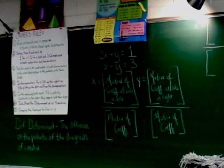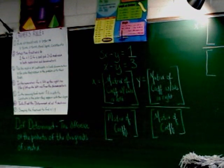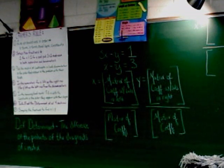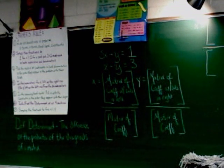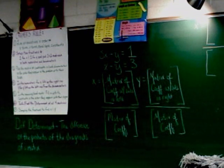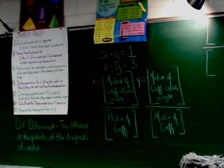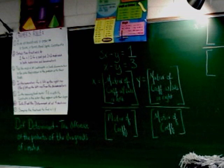Step three: put the matrix of coefficients in both denominators in the order they appear in the problem with their signs. Coefficients are just the numbers in front of variables, so you're going to take all the numbers in front of the variables and put them in the matrix — that's all.